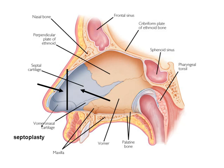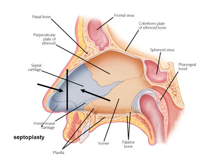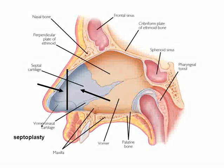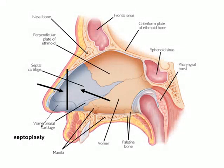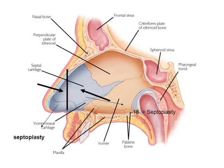However, the posterior half contains a growth center which continues to grow till the age of 18 years. As a consequence, deviations of the posterior part of the nasal septum should not be resected in patients less than 18 years of age and therefore are dealt by the procedure called septoplasty. Deviations above the age of 18 years can be safely resected, and this is done by a surgical procedure called submucosal resection of the nasal septum.